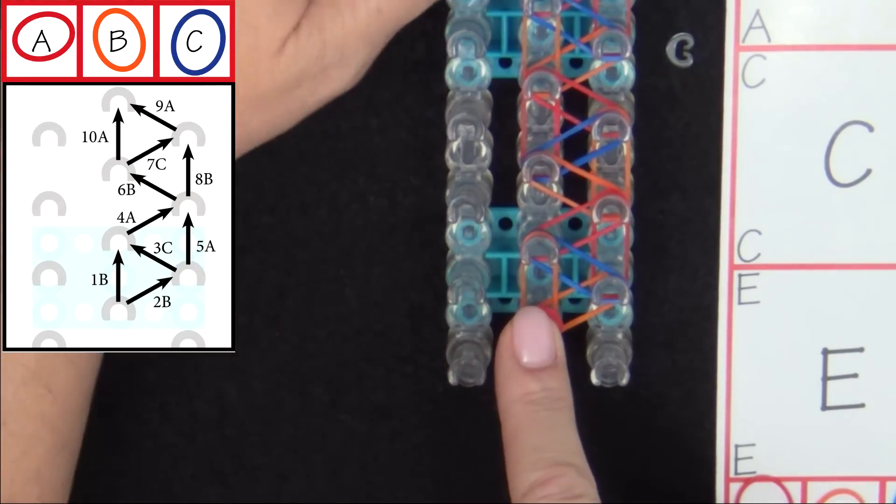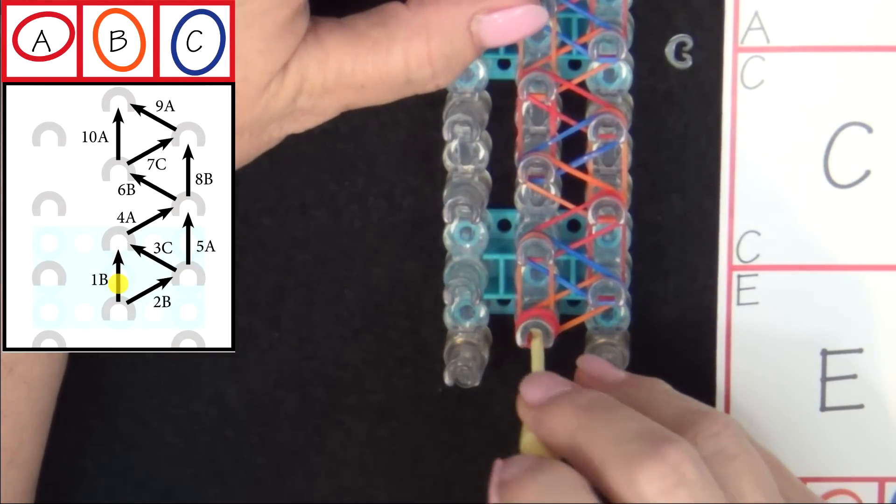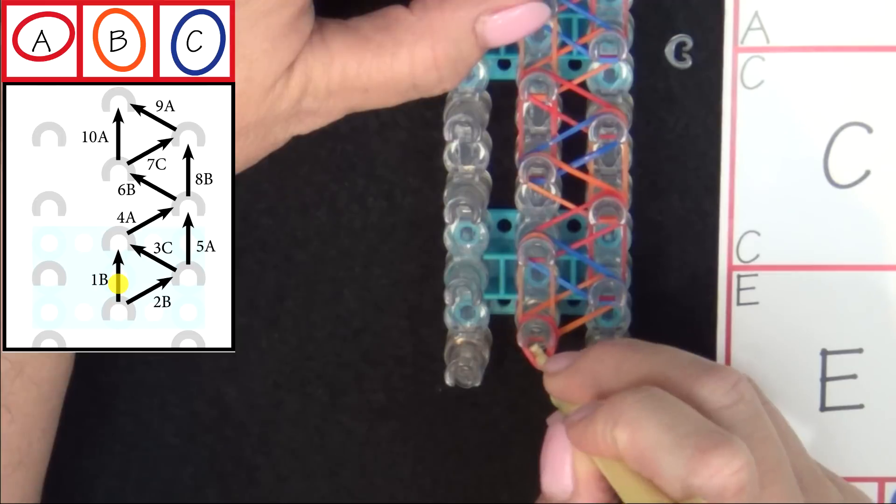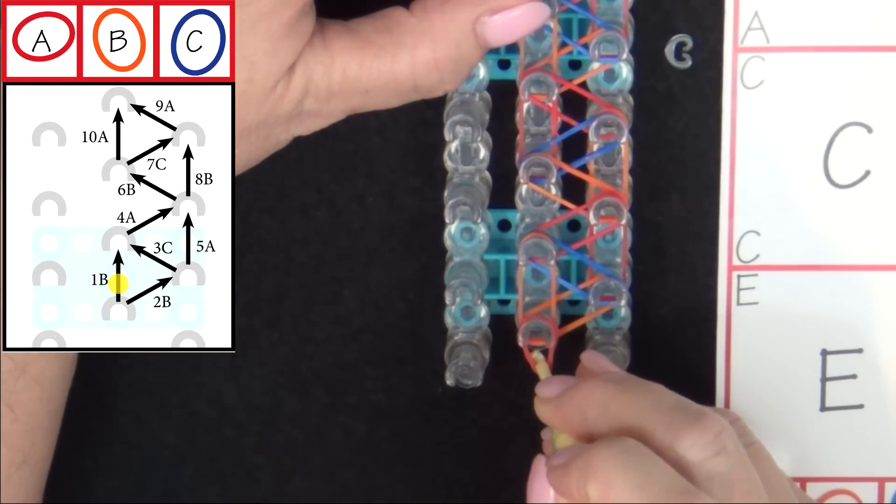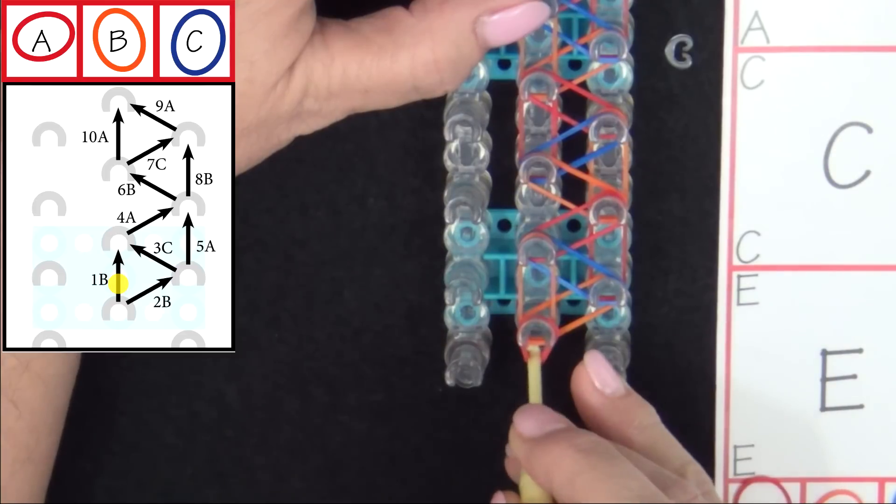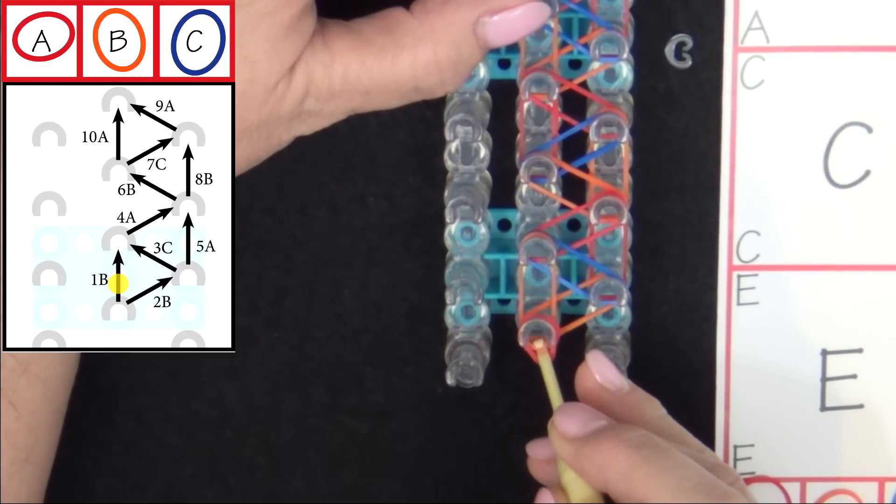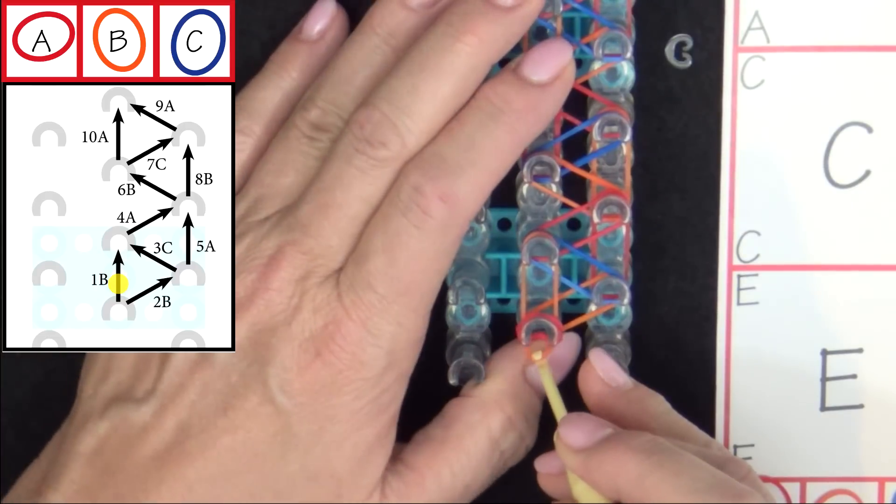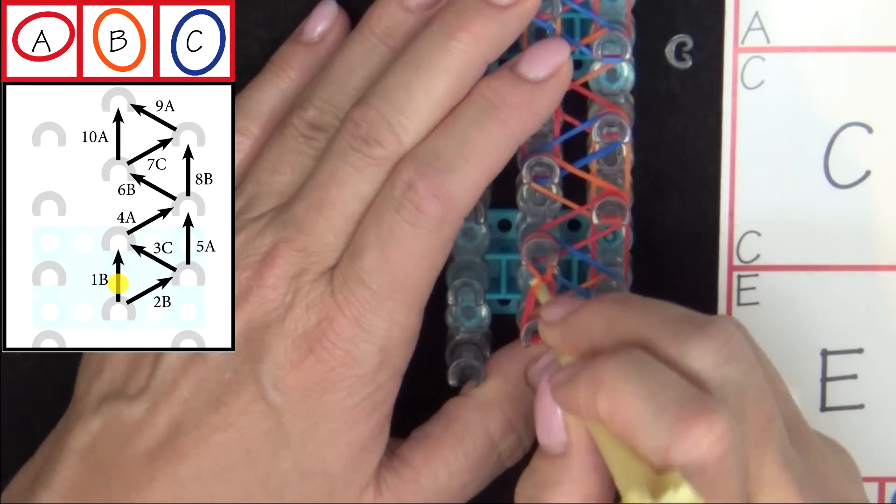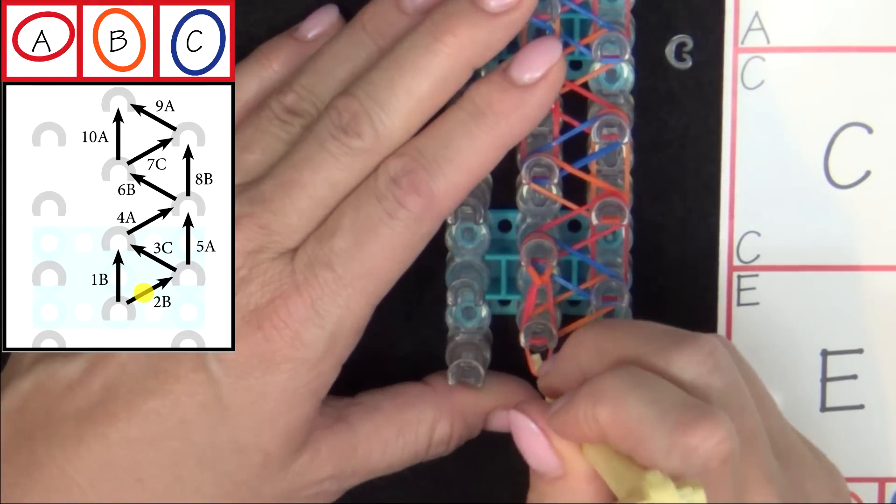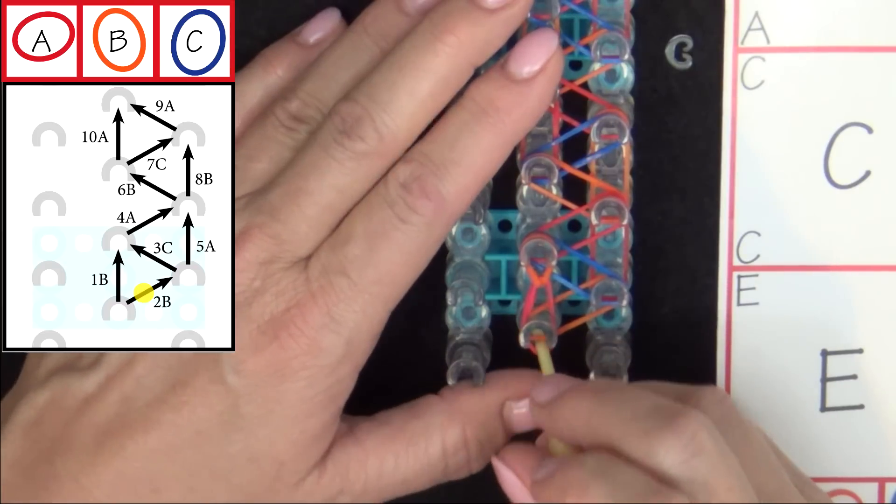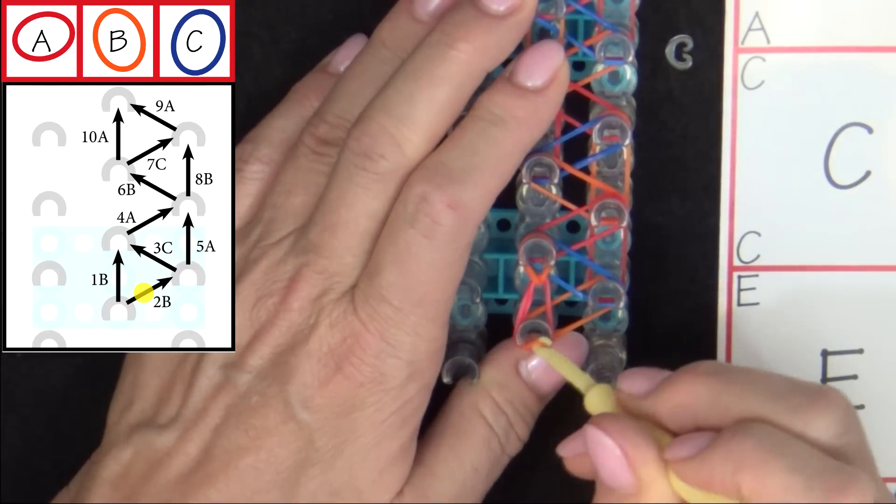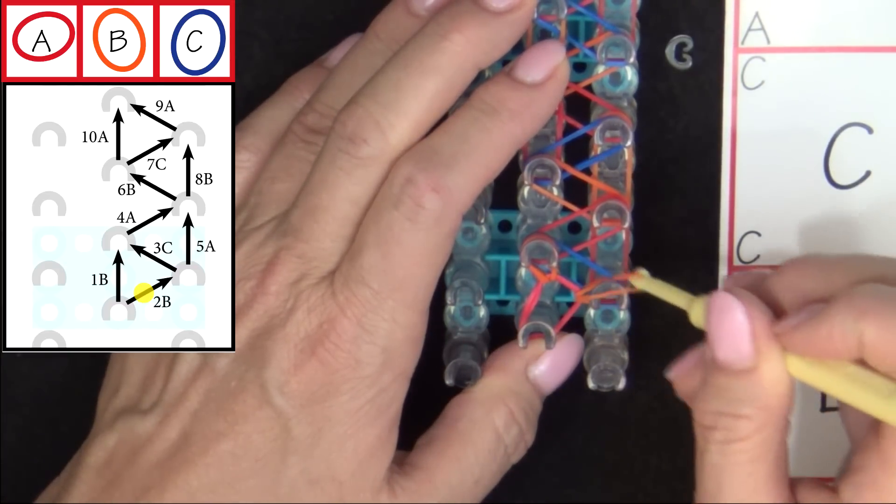We start from the center pin. Pull the cap band back with your hook. Grab the top B band. And loop it forward. Then you go back to that same pin. Pull back the cap band. Grab the second B band. And that one gets looped out to the right.